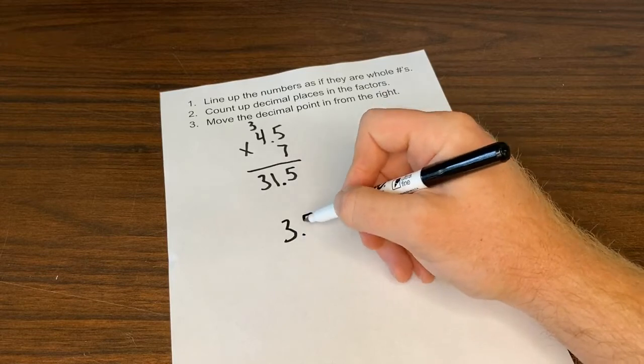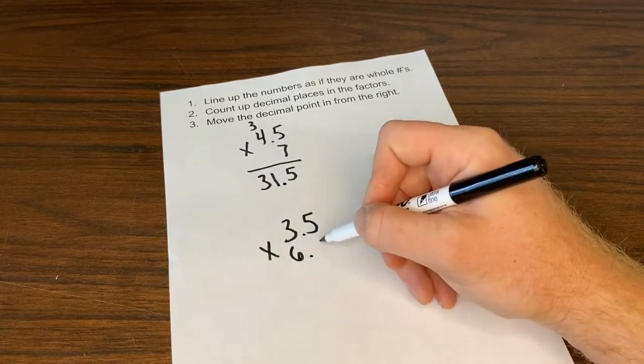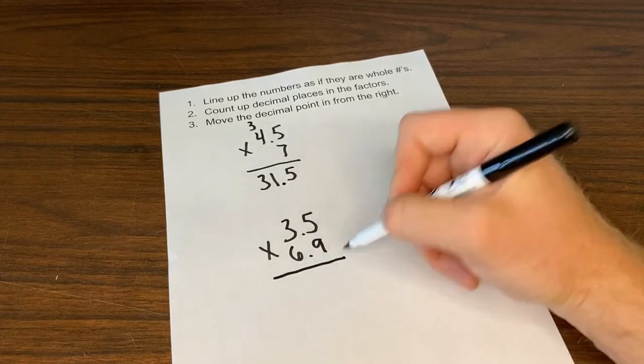Now, if both numbers have decimal places, we're going to have to add both those decimal place value spots. Here we go.